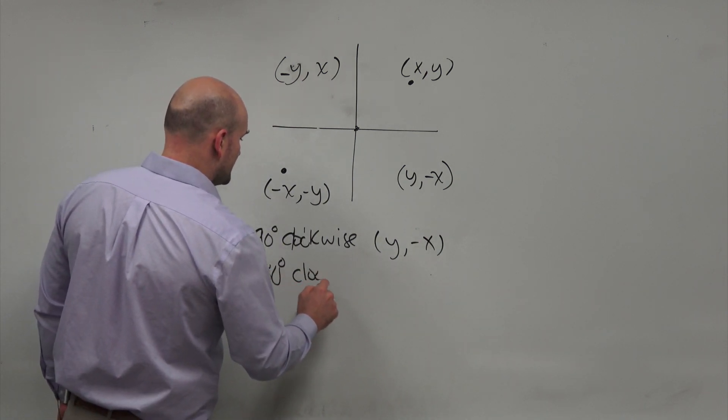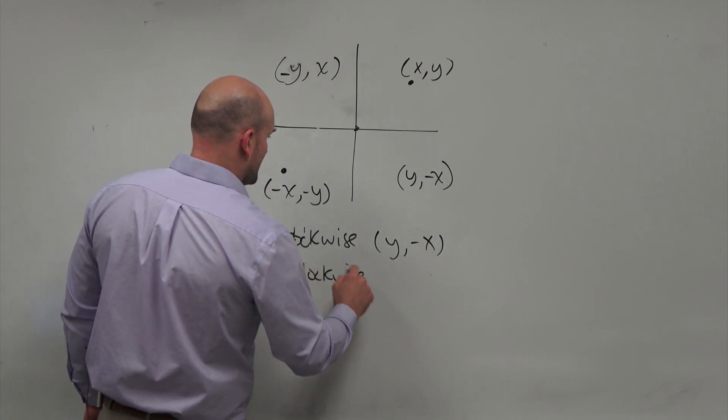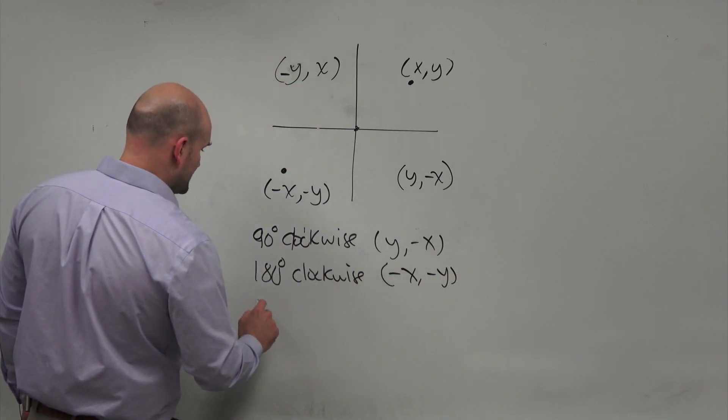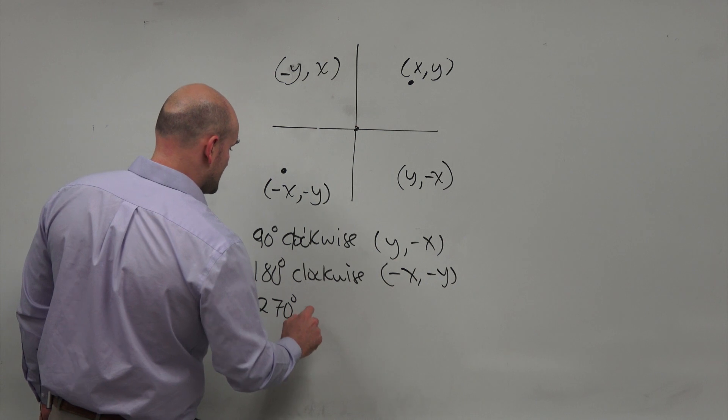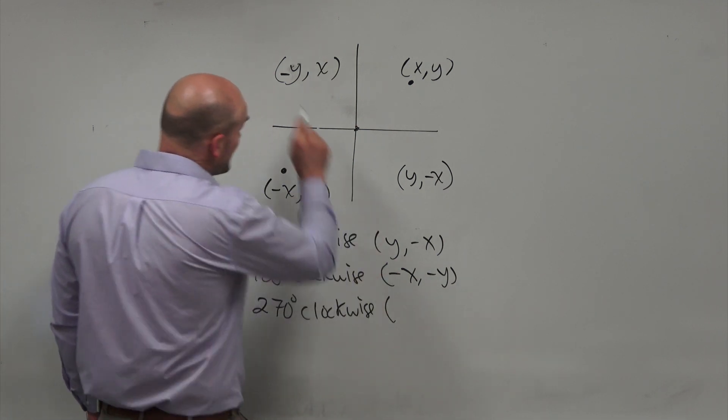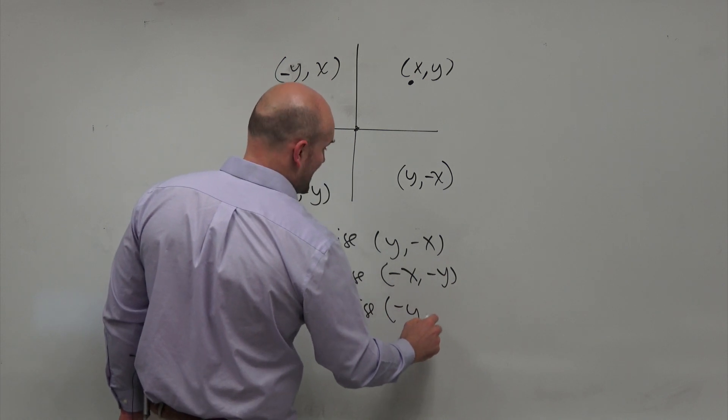180 degrees clockwise, that's going to be a negative x, negative y. And if you did a 270 degrees clockwise, you can see that now rule is going to be a negative y and negative x.